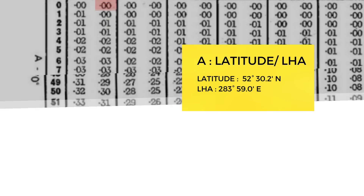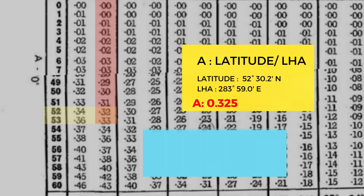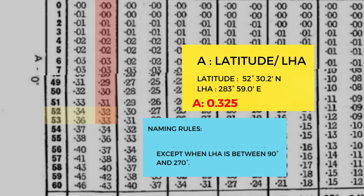Our latitude of 52° 30.2' is actually between 52 and 53 degrees. With those values, we get a reading of 0.325 for our A. For our naming rule, remember: A is named opposite to latitude, except when LHA is between 90° and 270°.